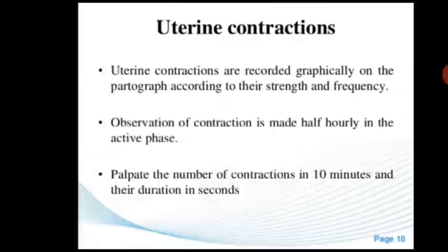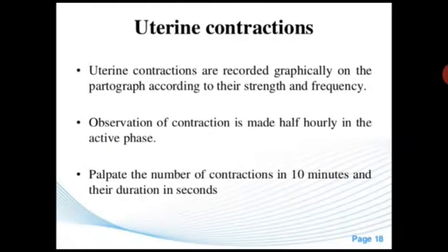Uterine contractions are recorded graphically on the partograph according to their strength and frequency. Observation of contractions is made half-hourly in the active phase. Palpate the number of contractions in 10 minutes and their duration in seconds.